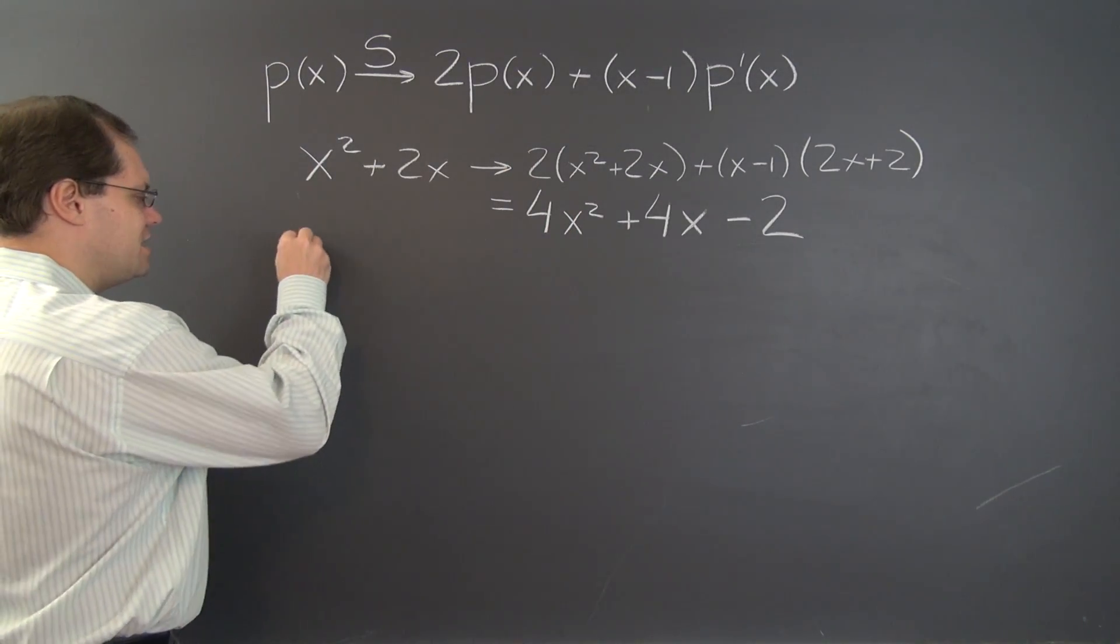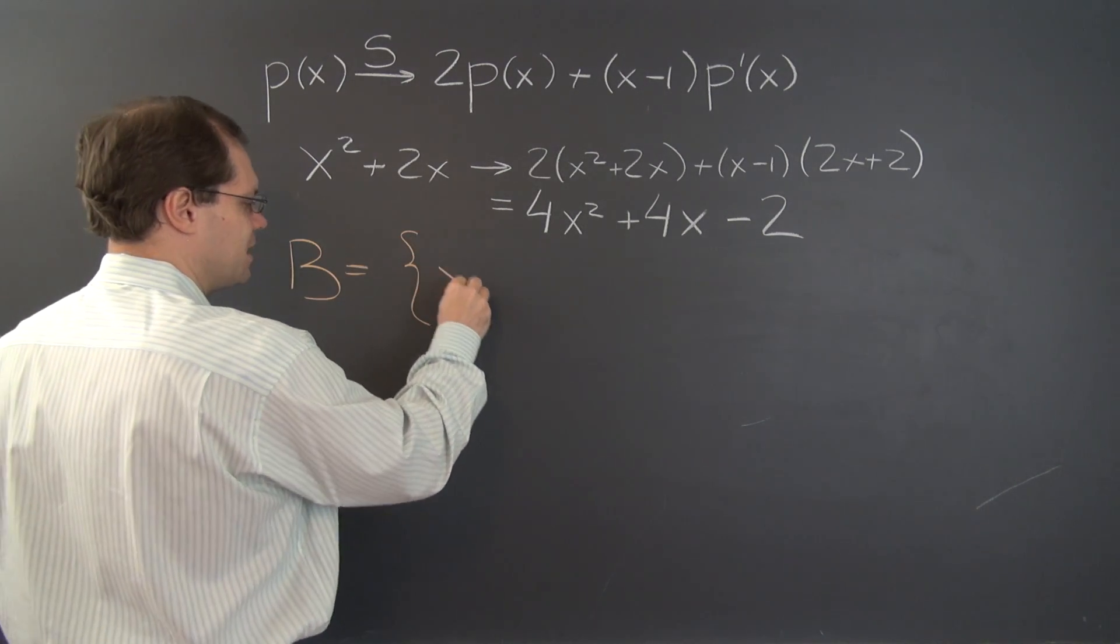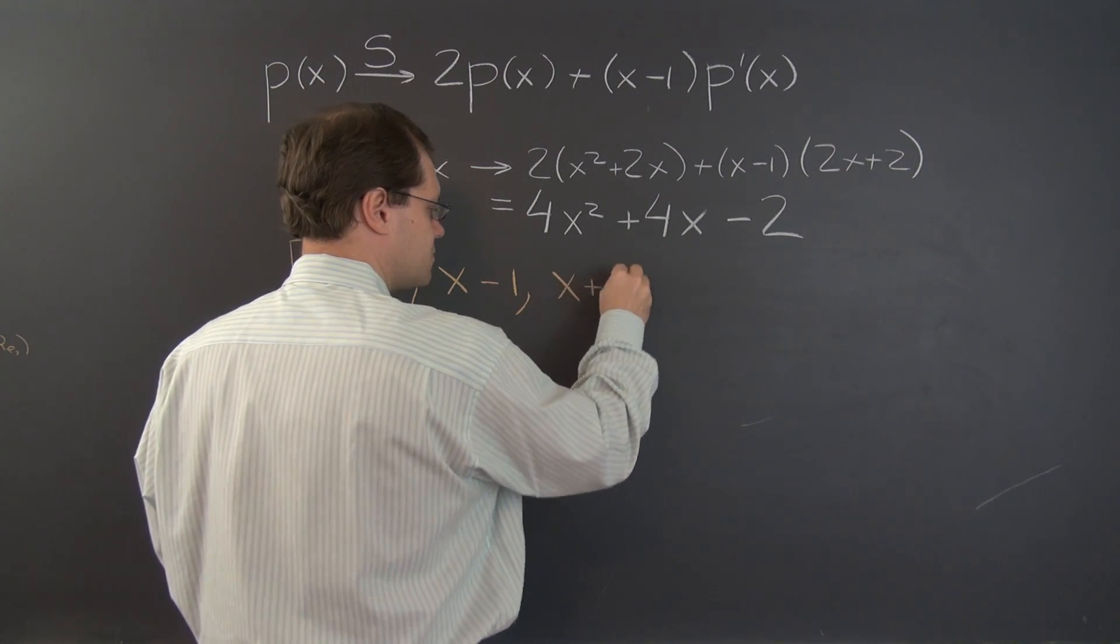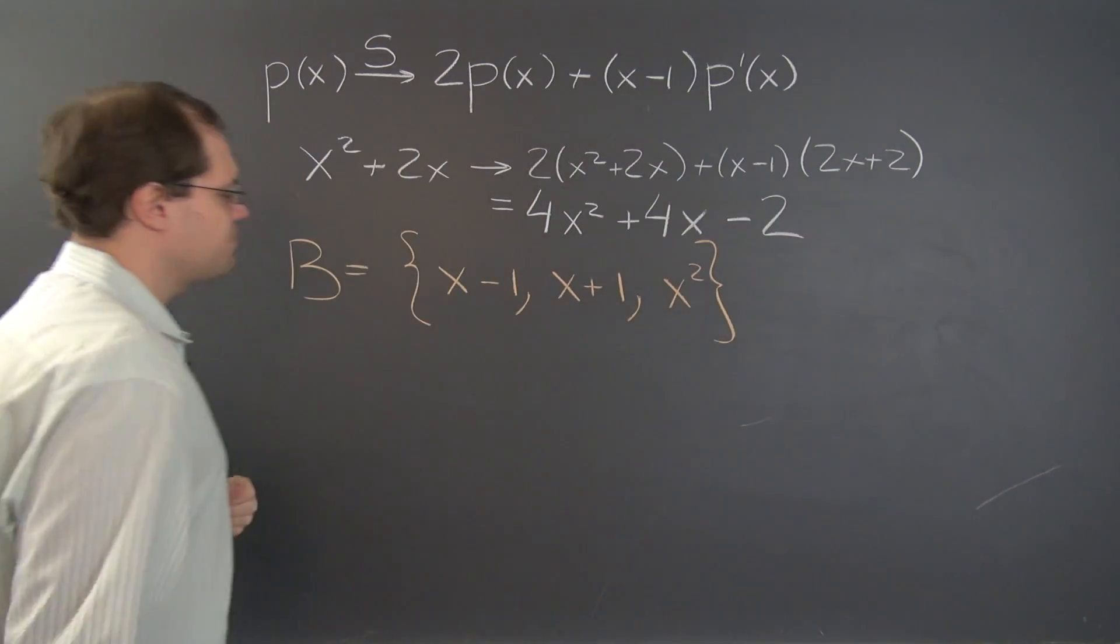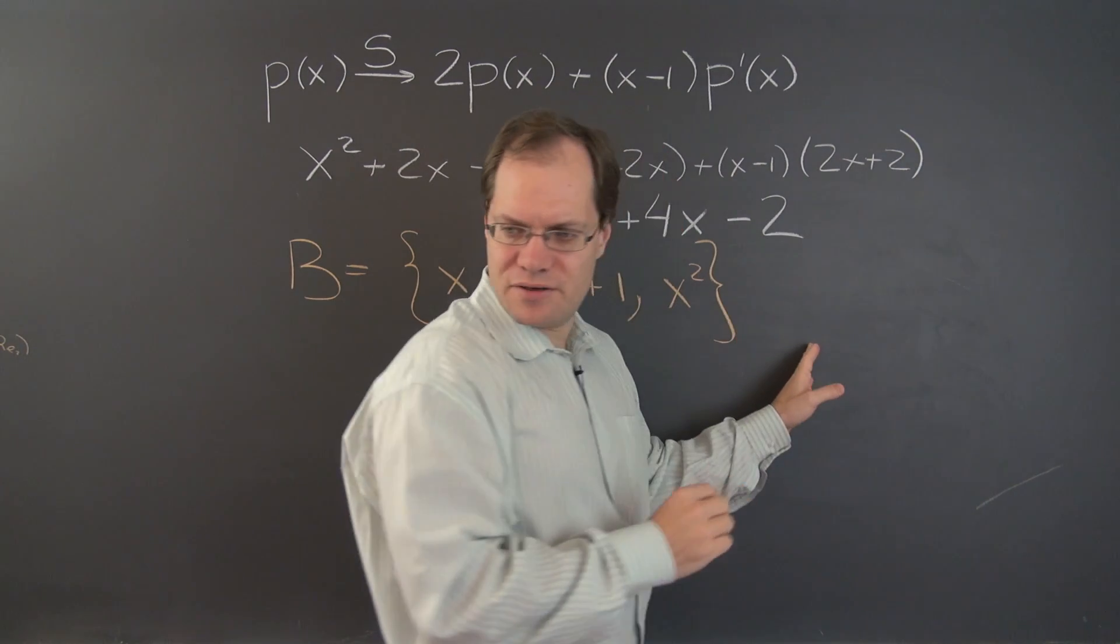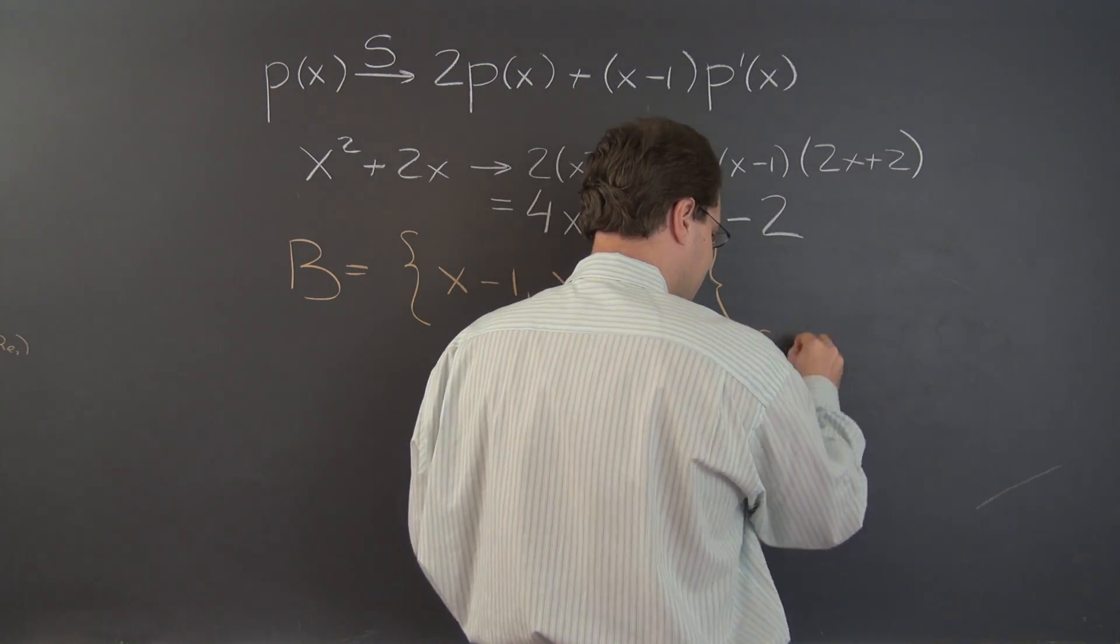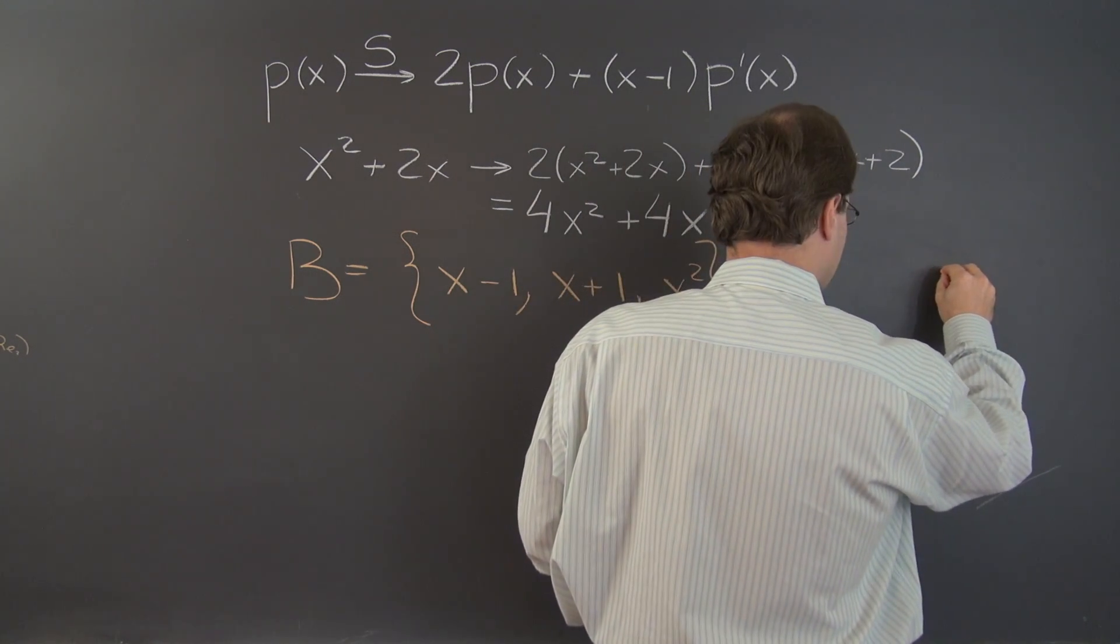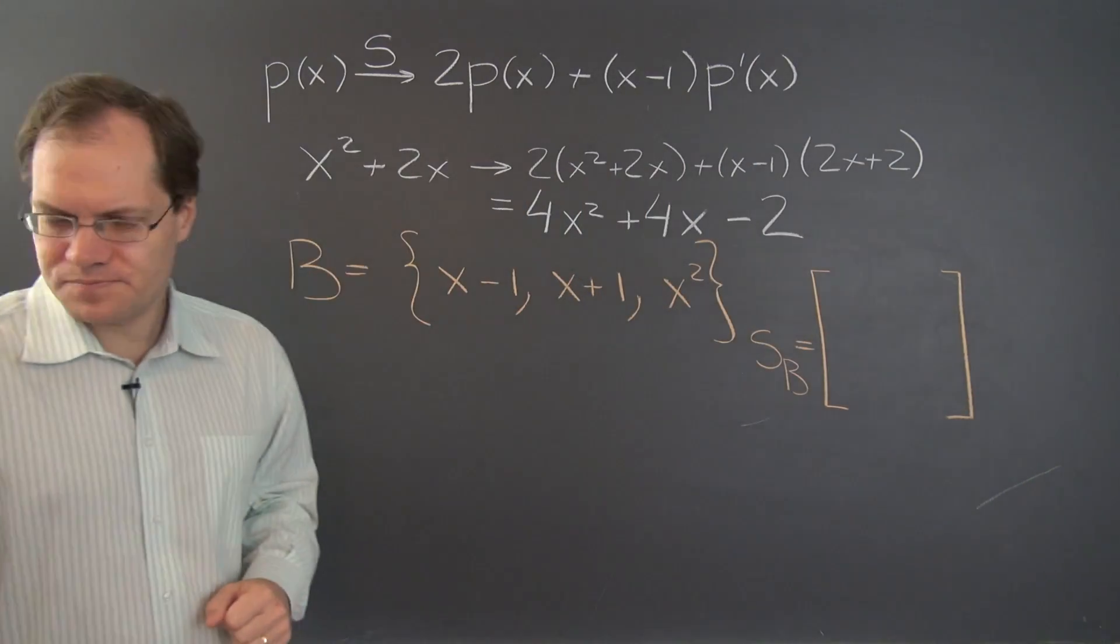Let's start by picking a basis. How about x minus 1, x plus 1, and x squared. And we'll construct the matrix S sub B right here. S sub B equals, it's 3x3 because we're dealing with a three-dimensional space here.